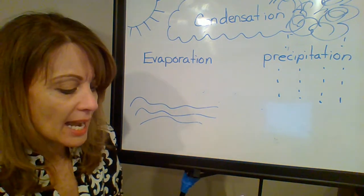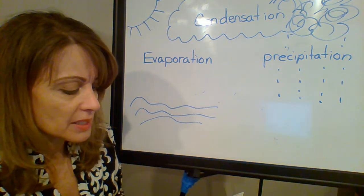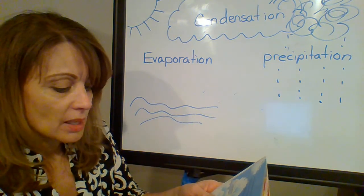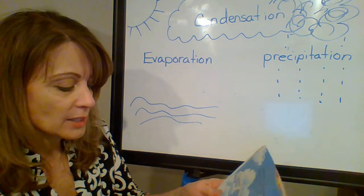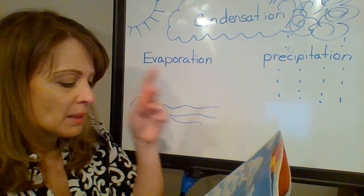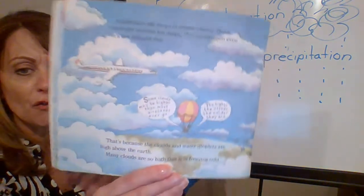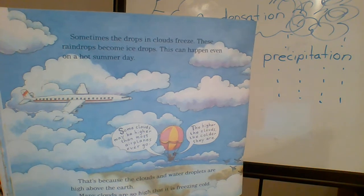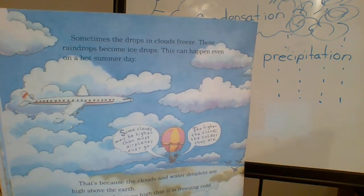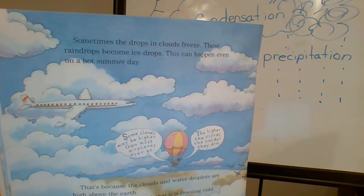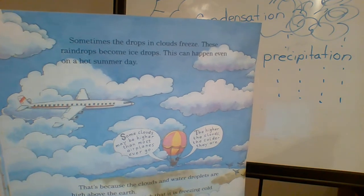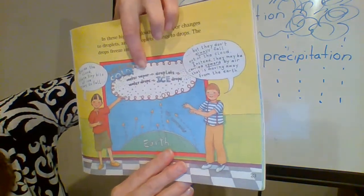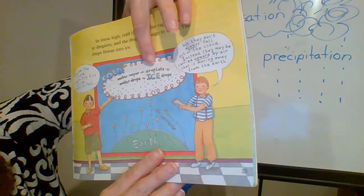Sometimes the drops in clouds freeze. These raindrops become ice drops. This can happen even on a hot summer day. Some clouds may be higher than most airplanes ever go — the higher the clouds, the colder they are. Many clouds are so high that it is freezing cold. In these high cold clouds, water vapor changes to droplets, and the droplets change to drops. The drops freeze into ice. Inside the cloud, these tiny bits of ice start to fall, but they don't always fall out of the cloud — instead, they may be carried upward by air moving away from the earth. So you can see: freezing cold, water vapor, droplets, water drops, ice drops.